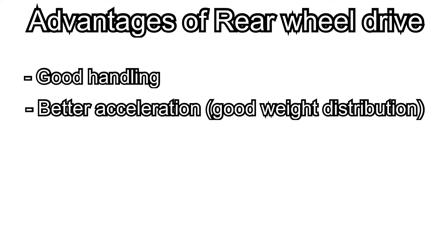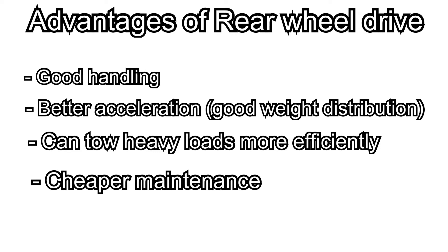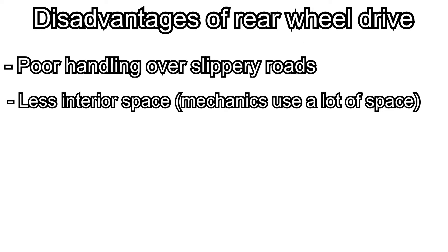Rear wheel drive vehicles generally have good handling and better acceleration due to their front-to-rear weight distribution, and they can perform towing duties more efficiently. Maintenance on a rear wheel drive vehicle is also cheaper. However, rear wheel drive vehicles generally have poor traction over slippery roads, making them more prone to slipping out of the track. There is also less interior space due to the room required for the transmission and drive shaft — hence the drive shaft hump.